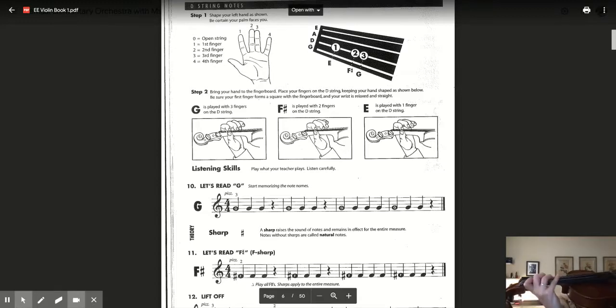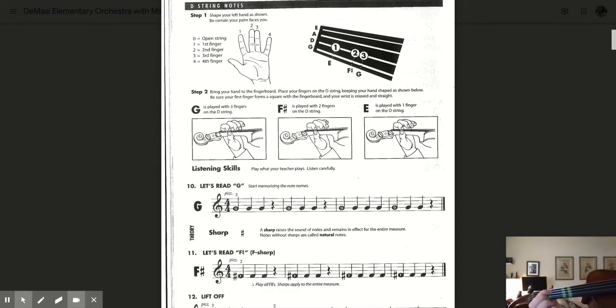Now the notes that you can create are shown here in your essential elements book. First finger, one finger down on the tape creates the note E on D string. Two fingers down on D creates the note F sharp. Remember, you have to have two fingers down to make that note. And then three fingers down makes the note G on D string.